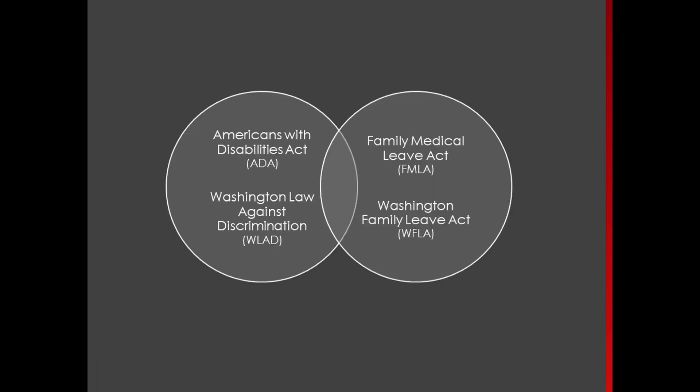There is a pretty complex web of laws that are triggered when you have an employee with a health issue. Today we're going to be focusing on four of those. The two disability discrimination laws: the Americans with Disabilities Act, which is the federal law, and its Washington State counterpart, the Washington Law Against Discrimination. The Washington Law Against Discrimination is quite a bit broader than the federal law, and we'll be focusing especially on the more protective Washington Law.